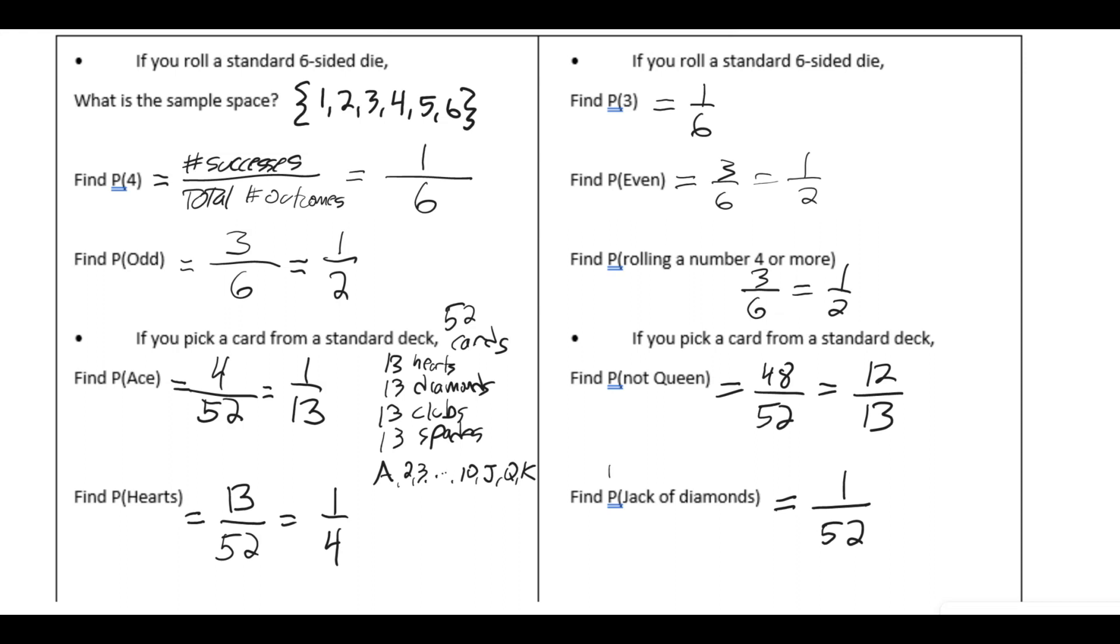This can also be written the probability of jack and diamond. So this is actually our first chance of doing a probability of an and. Okay. I hope this helps. Thank you.